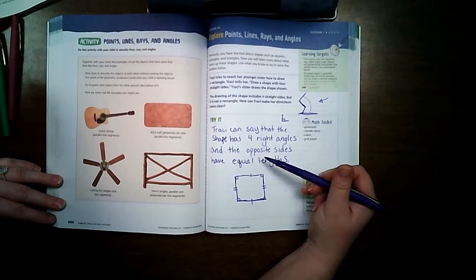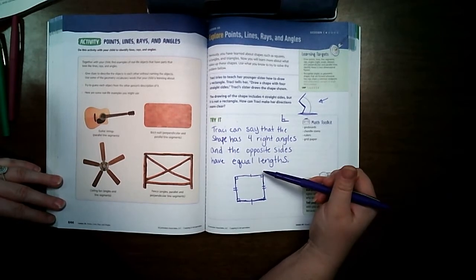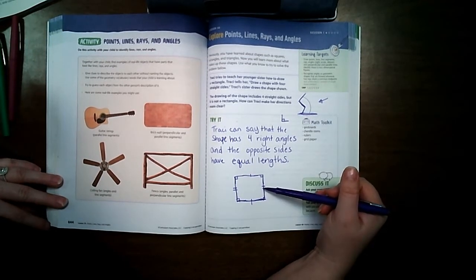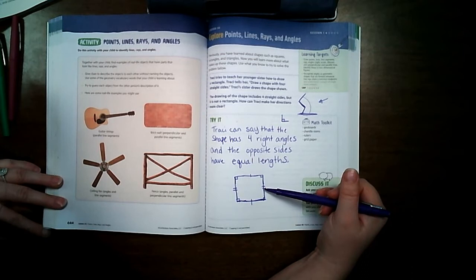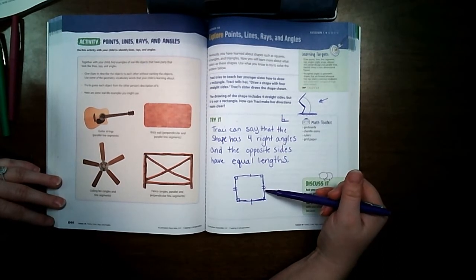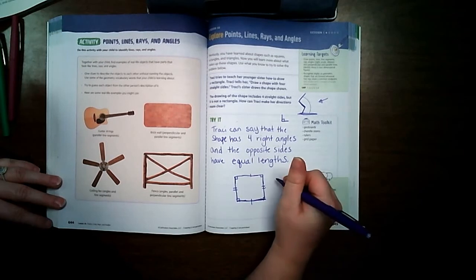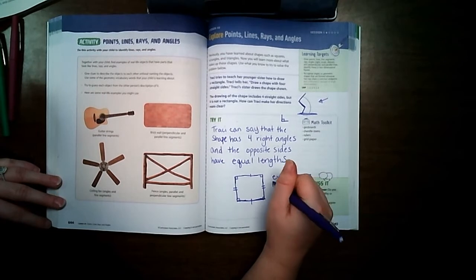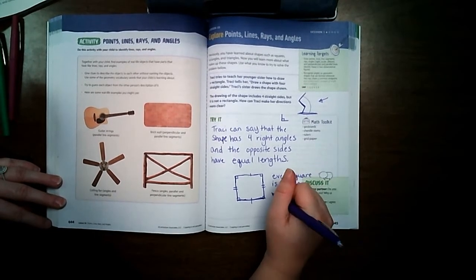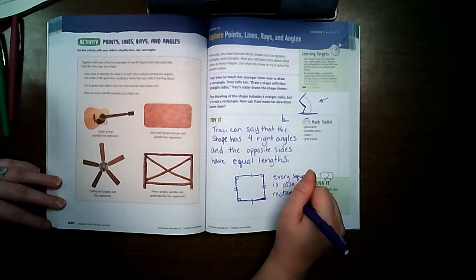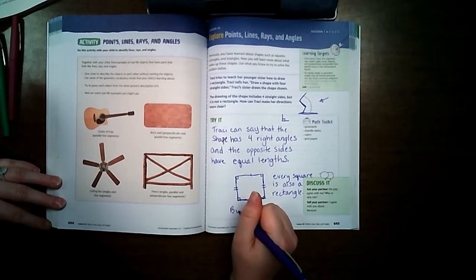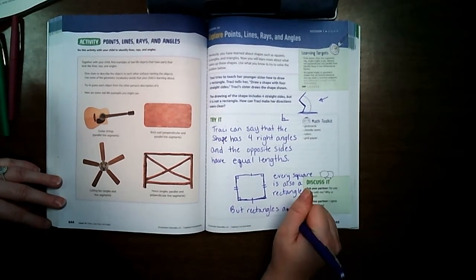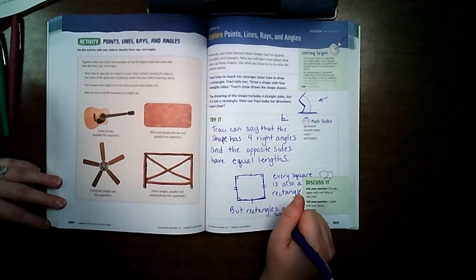The opposite sides are equal lengths—that describes a rectangle. But to describe a square, all four sides have the same length, and so that is why every square is also a rectangle, but rectangles are not squares.